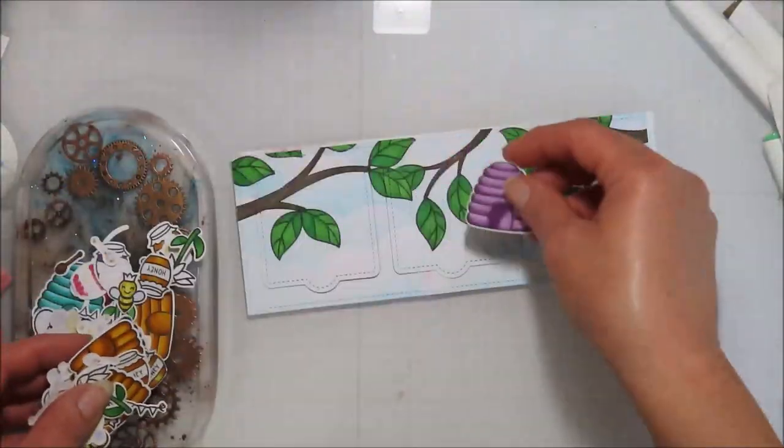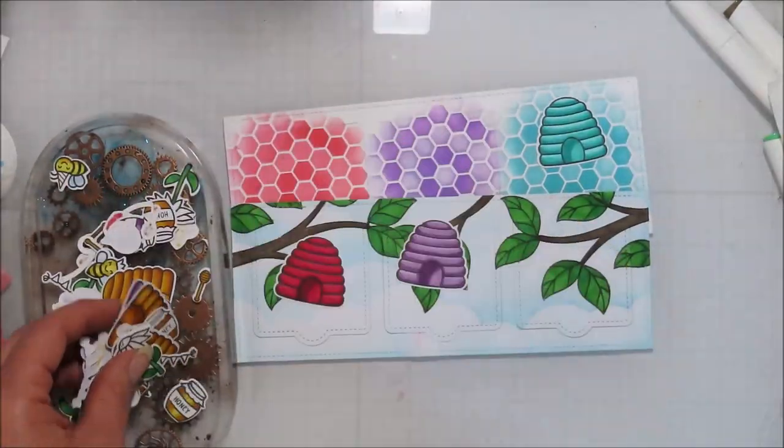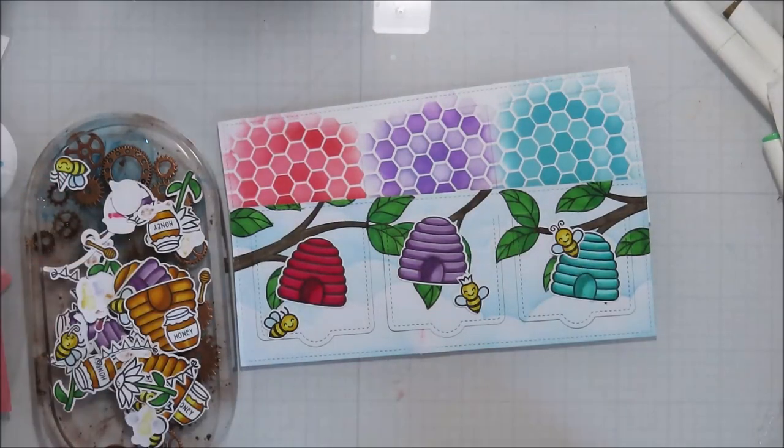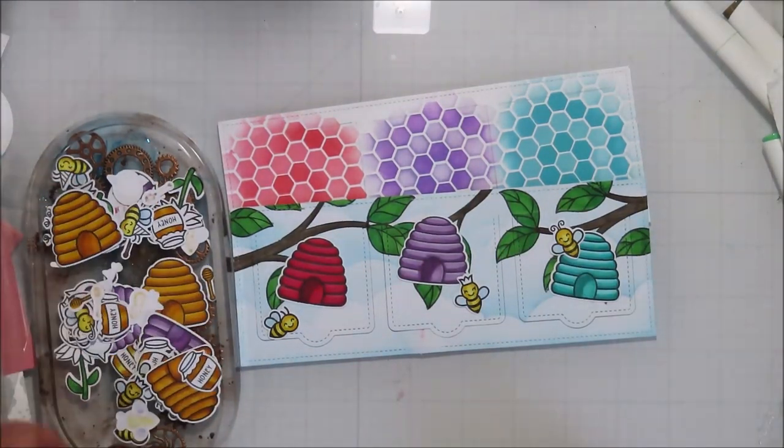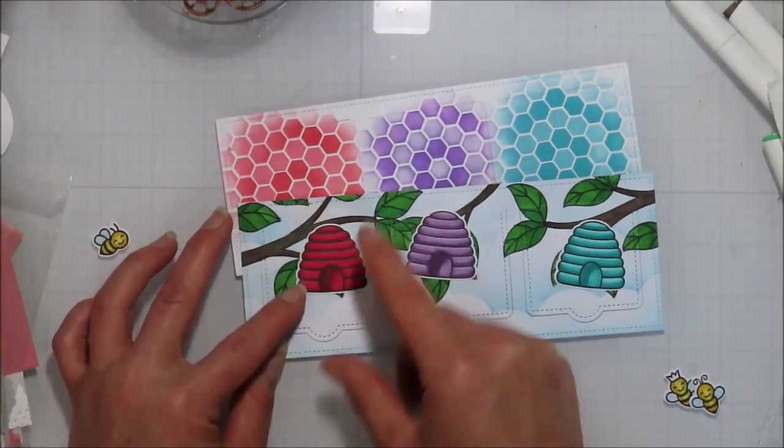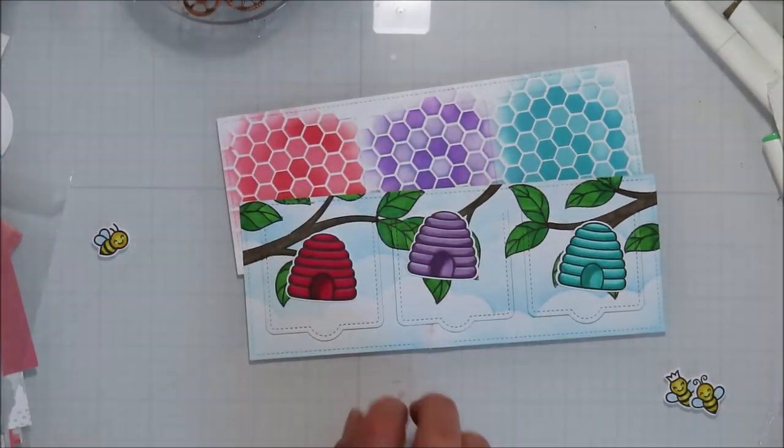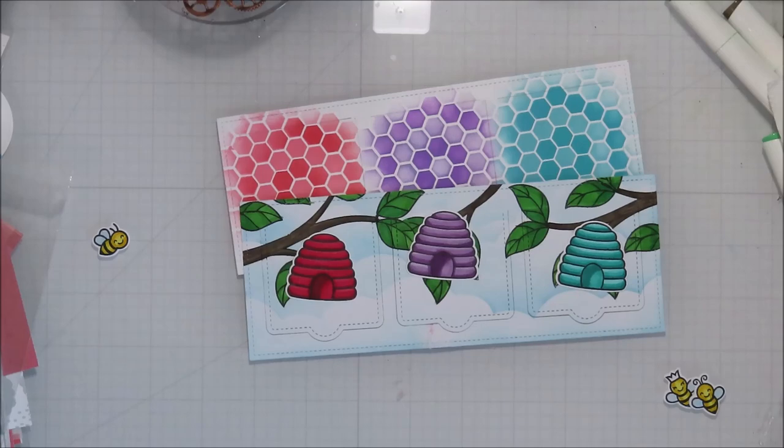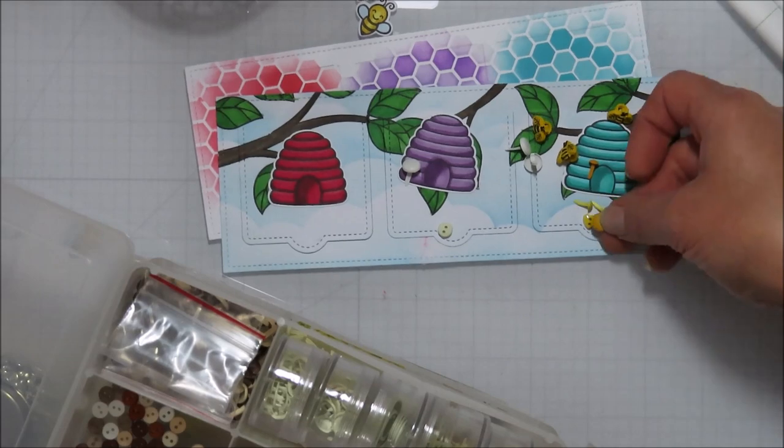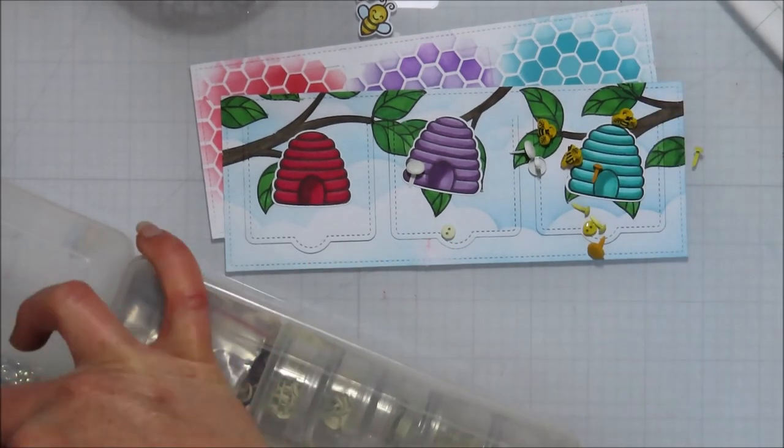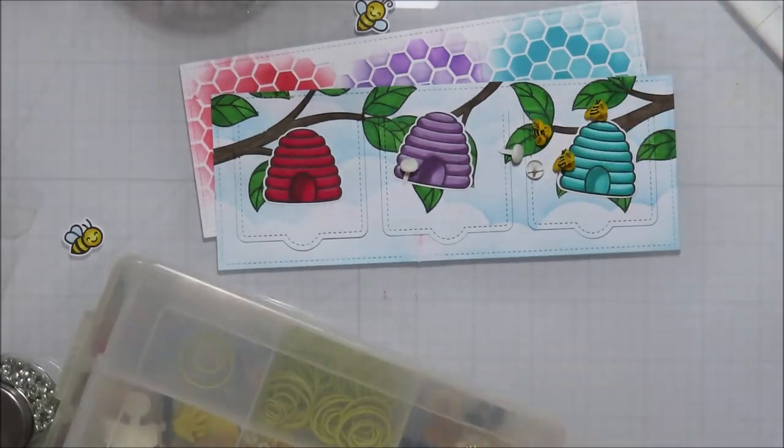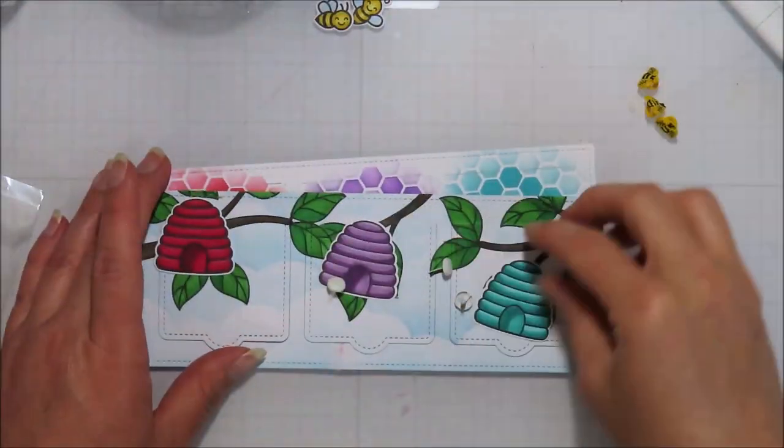So I die cut all of my images out and yes I had colored a whole bunch of images so I just sat and die cut it for like I don't know an hour. It took forever. Now I remember why I like the purple's scan and cut. So I'm just figuring out hive placement here and I was planning on using the bees from the set.